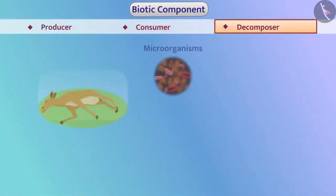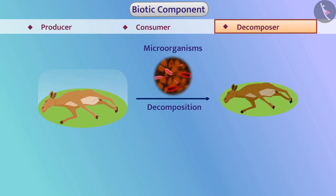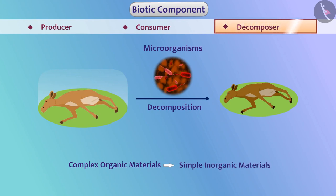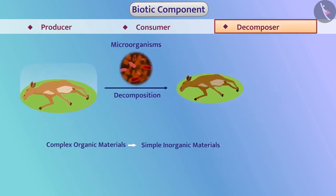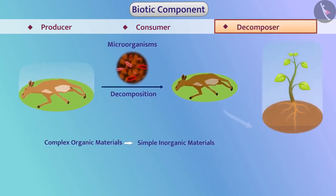Many microorganisms such as bacteria and fungi decompose dead remains of organisms and convert these complex organic materials into simple inorganic materials. Such organisms are called decomposers. These substances are absorbed by plants. Decomposers play a vital role in the cycling of nutrients.